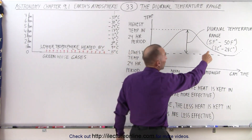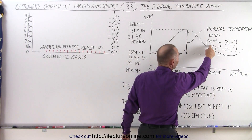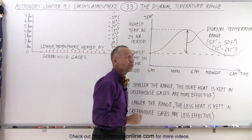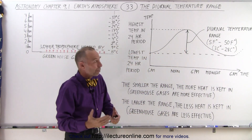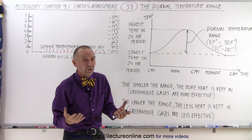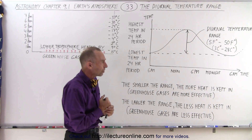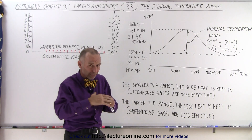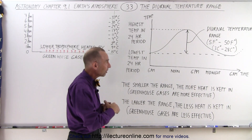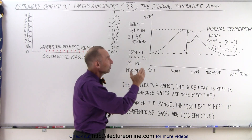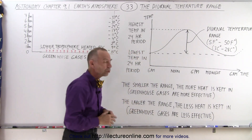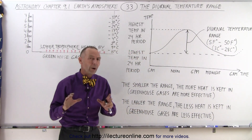Notice the range can be anywhere from about 5 Fahrenheit degrees to about 50 Fahrenheit degrees, which is about 3 Celsius degrees to about 28 Celsius degrees. Of course, it can even be higher and lower under certain special circumstances, but you can see that there's a tremendous difference in that diurnal temperature range, and we'll talk about why that difference exists.